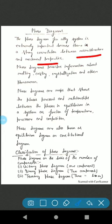Phase diagrams are maps that show the phases present and relationships between the phases in equilibrium in a system as function of temperature, pressure and composition. Phase diagrams are also known as equilibrium diagrams or constitutional diagrams.